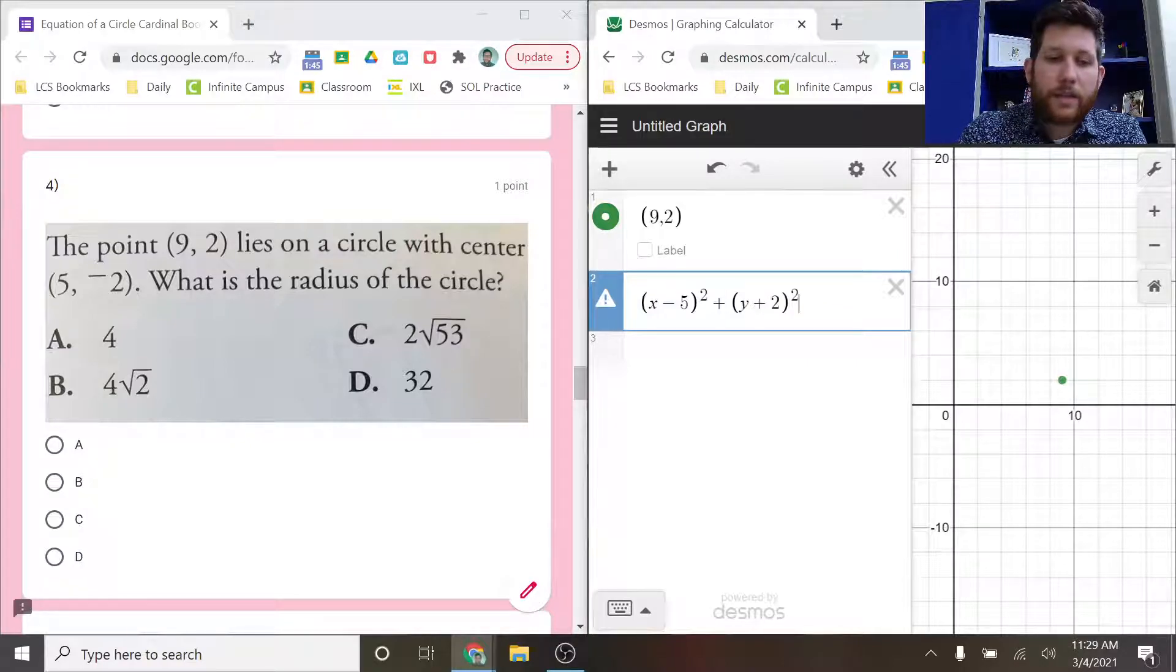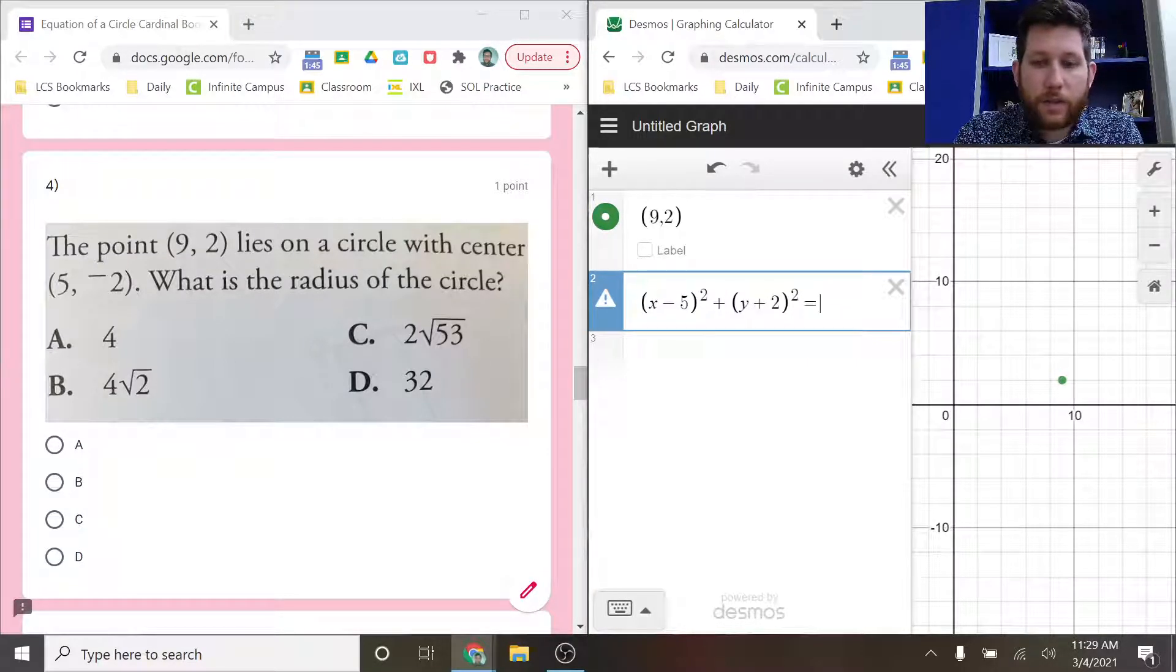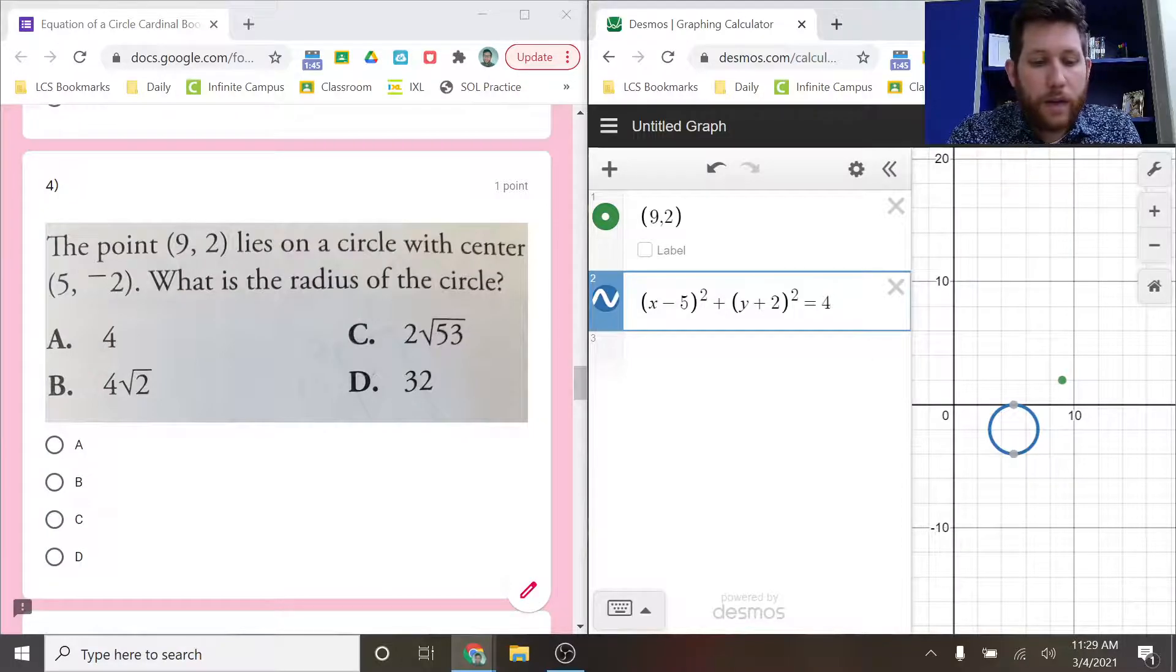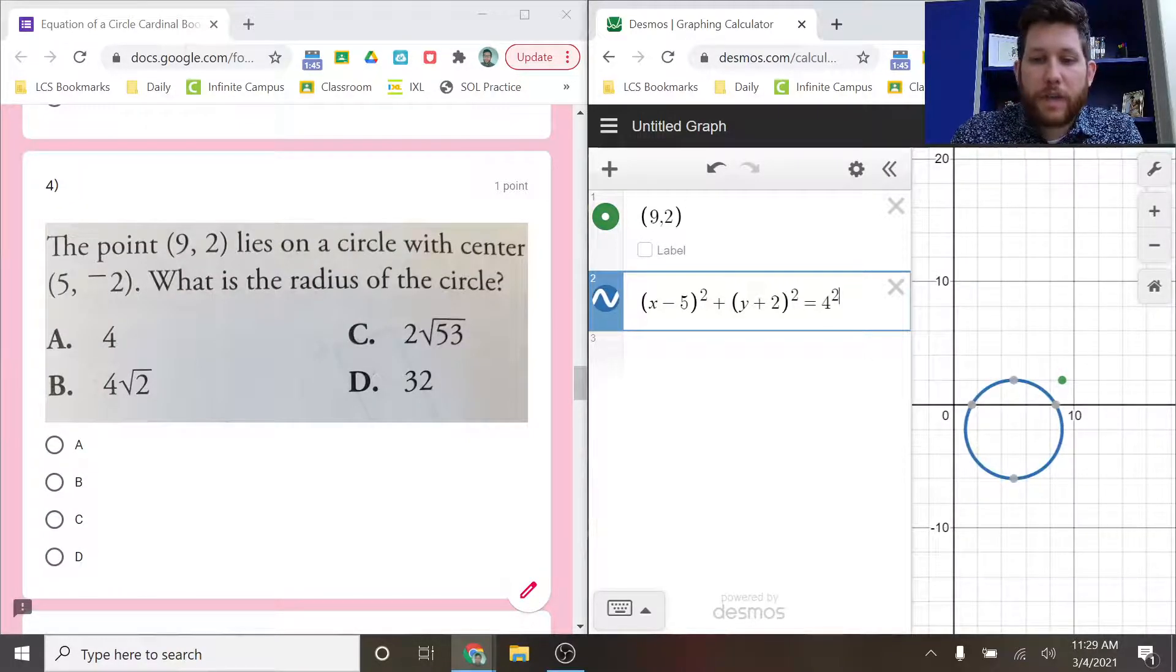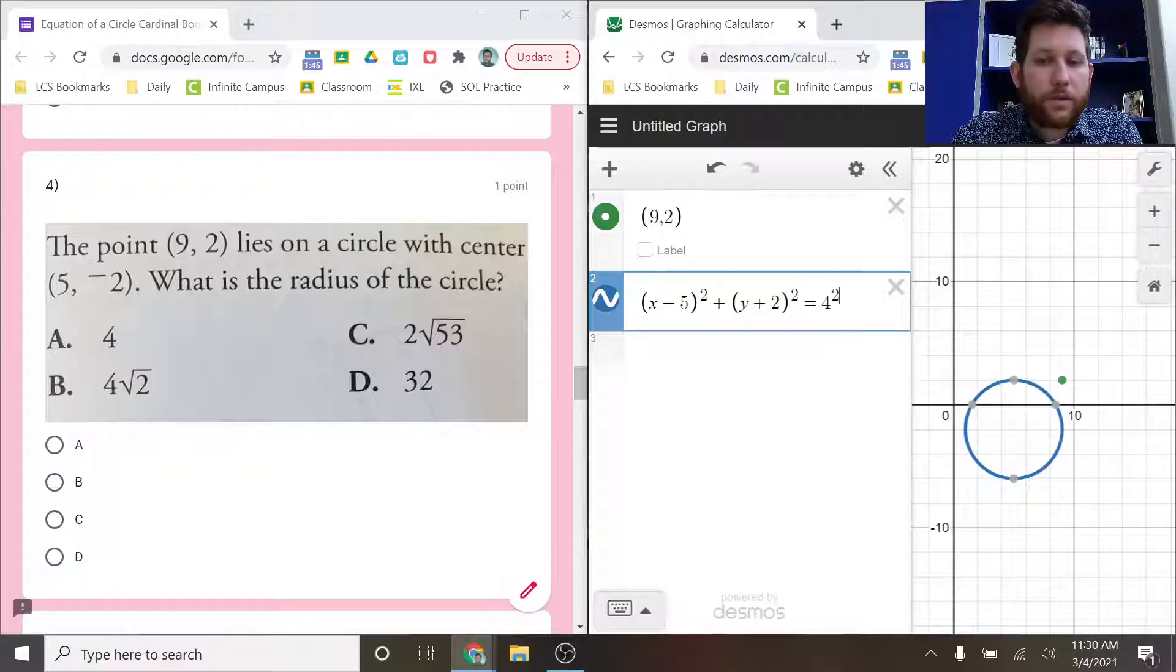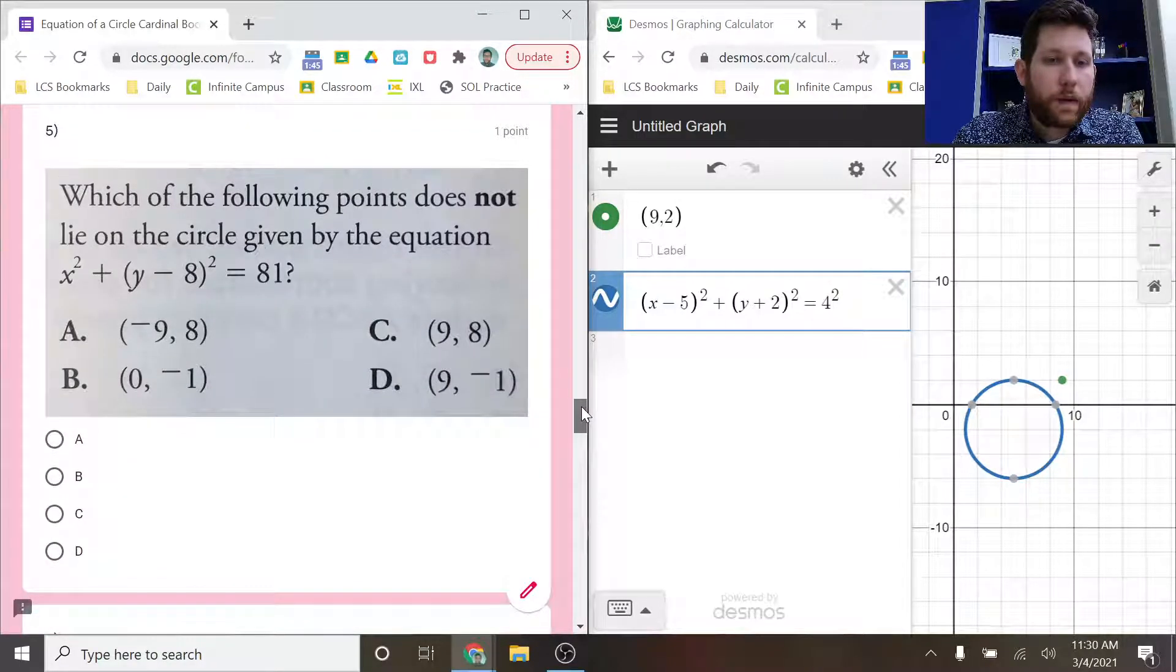But they're asking for the radius of the circle. So what I can do is I can start typing these things in. So equals 4 squared. And make sure you get your squared, because remember, it's a squared, b squared, c squared. This is, here's our center. This is our radius squared. So I just grabbed, I just tried the first one, and it didn't work. But I could try other values in here. I could try the 2√53. I could try the 4√2, the 32, and see which one of these intersects with the point on the circle. So that'd be a way to use Desmos on that particular problem.